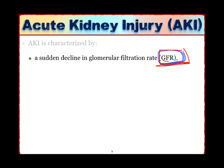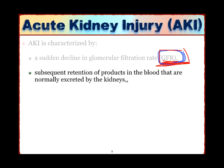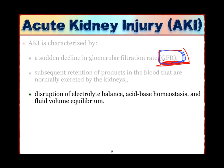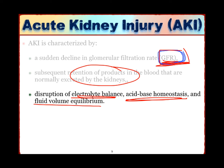A normal GFR depends on normal blood volume, normal blood pressure, normal internal kidney structure, and a patent urinary tract. When the GFR declines, all kidney functions decline. As a result, the patient will not be able to excrete extra or unwanted materials — whether fluids or waste products. So the patient will have fluid accumulation, electrolyte imbalance, acid-base imbalance, and retention of waste products.